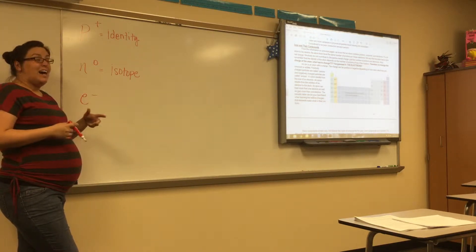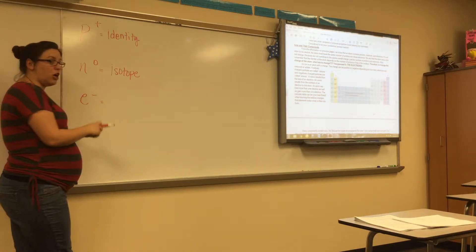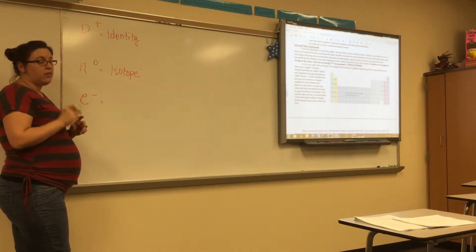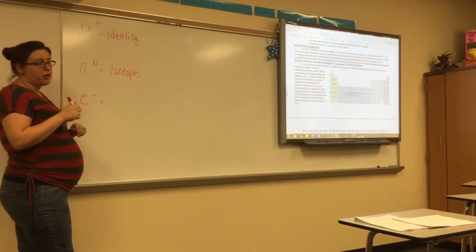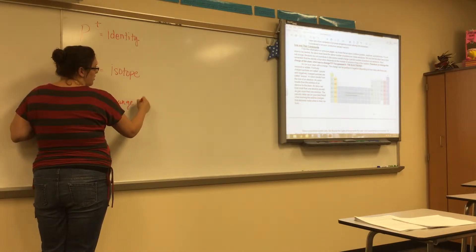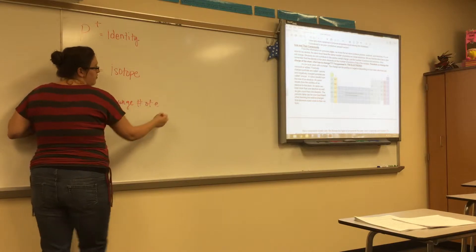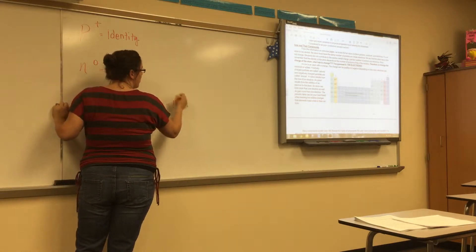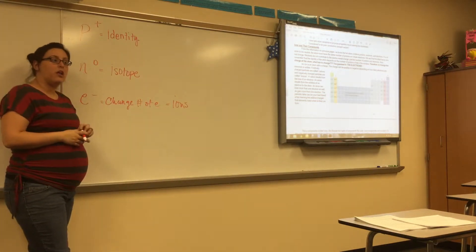So, we're going to learn about what's called an ion. An ion is a charged particle. And the only way to get a charged particle is to change the number of electrons. You change the number of electrons, you create what's called an ion.